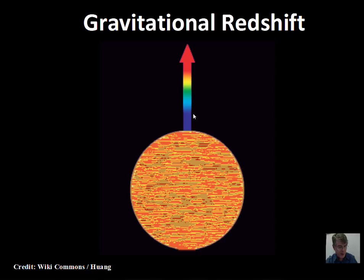Many other tests of general relativity have been done, and everything is in agreement with the theory — it is an accepted description of how the universe behaves. Mass distorts and curves space-time, creating effects including shifting the path of light so it no longer moves in a straight line but follows the geodesic — the shortest path in space-time from one place to another. Keep reading and write down questions to ask your instructor.